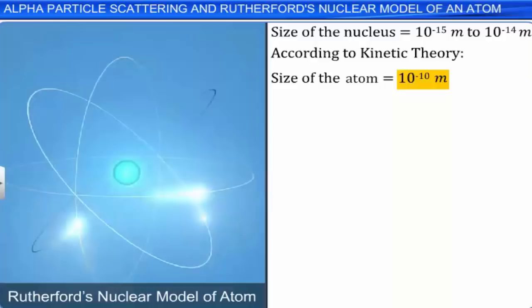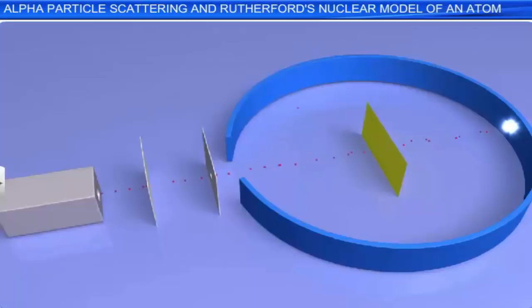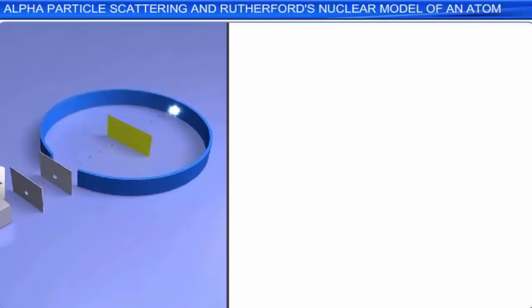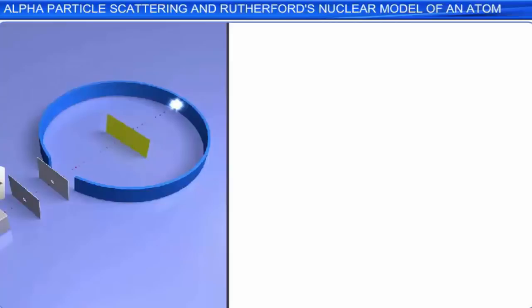Using Rutherford's nuclear model of the atom, we can explain the scattering of alpha particles from the gold foil. As the gold foil is very thin, it can be assumed that the alpha particle undergoes one scattering due to the gold nucleus. So, to calculate the trajectory of an alpha particle, it is enough to consider the scattering of an alpha particle by a single gold nucleus.